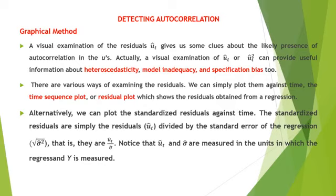The graphical method is a visual examination of the residuals. It gives us some clues about the likely presence of autocorrelation in the disturbance terms. A visual examination of u_t or u_t squared can provide useful information not only about autocorrelation, but also about heteroscedasticity, model inadequacy, or specification bias. To detect autocorrelation, we can plot and observe the pattern of residuals obtained from OLS estimation. We can observe whether the error terms are related to each other in two ways.